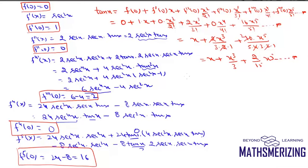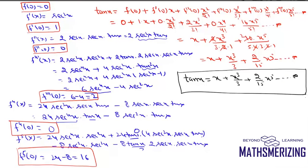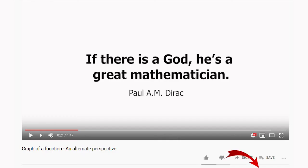So from the Maclaurin series we can say that tan(x) can be approximated as x + x³/3 + (2/15)x⁵ up to infinite. This is how we derive the series expansion of tan(x). If you like the video, consider subscribing and sharing it with someone who might benefit.